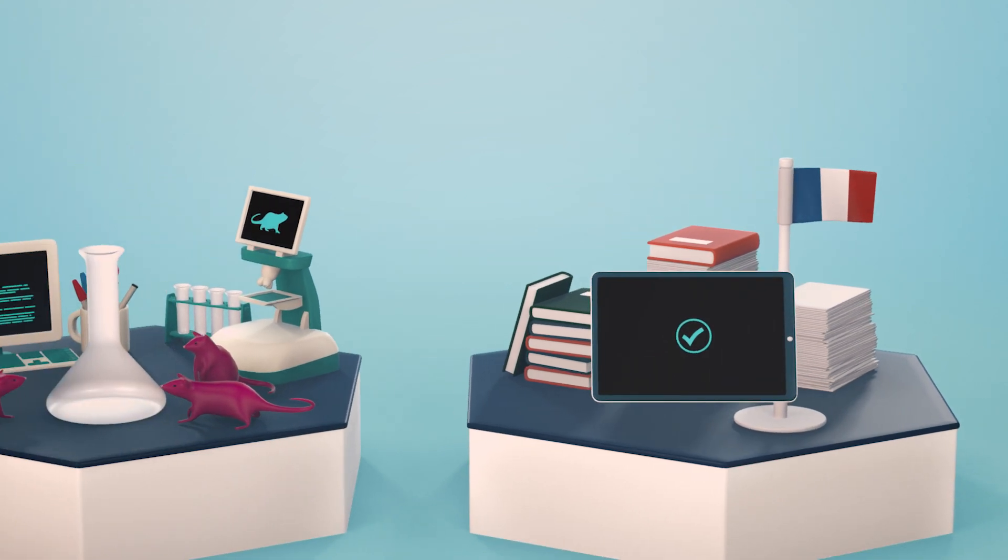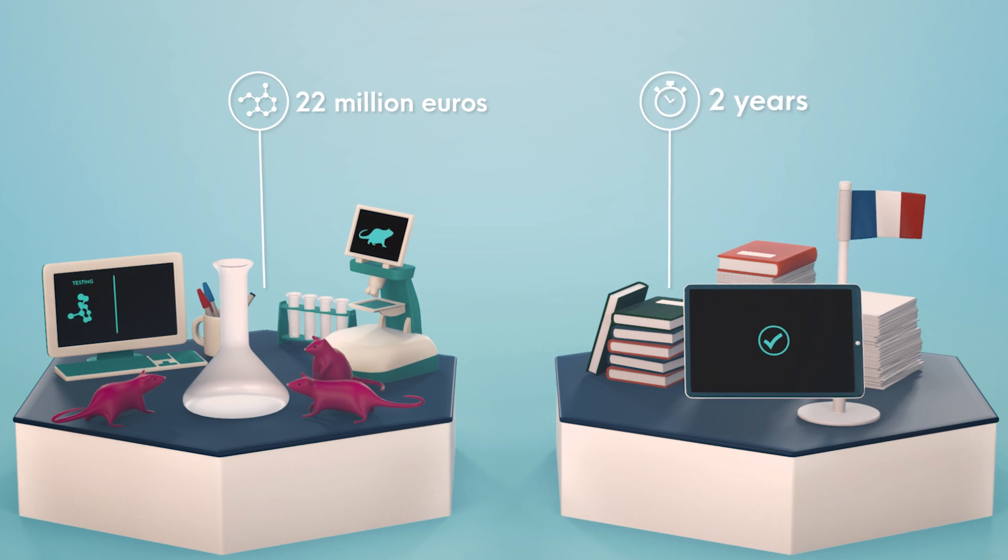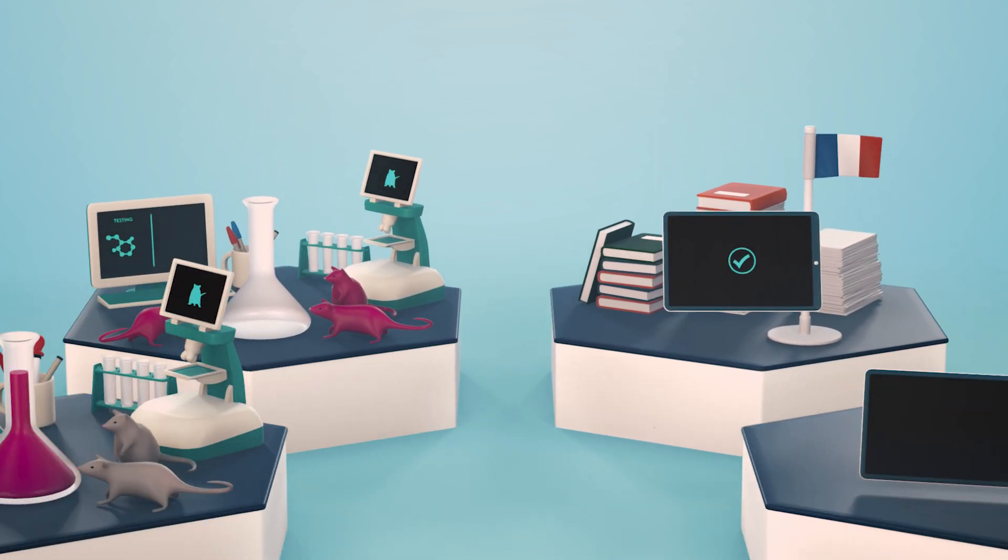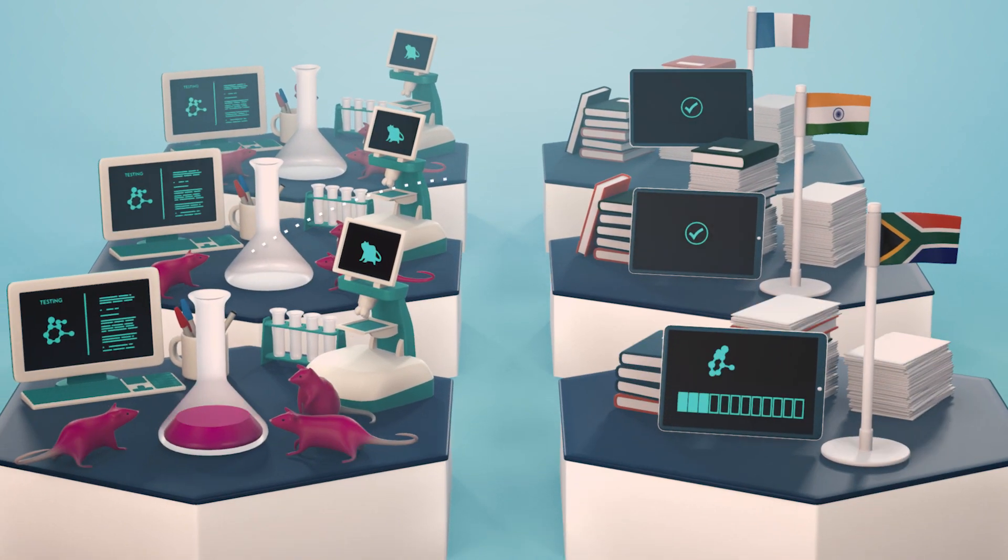This process is very resource intensive. For instance, testing one new pesticide costs a company about 22 million euros and takes the government about two years to review. And this testing and review could be repeated in every country in which the pesticide is sold.